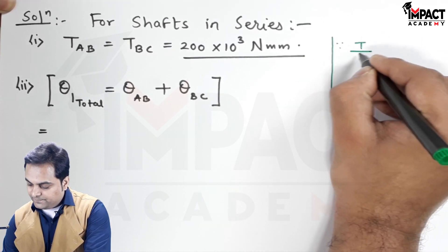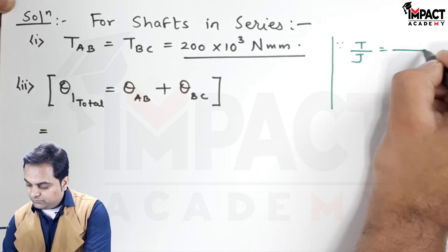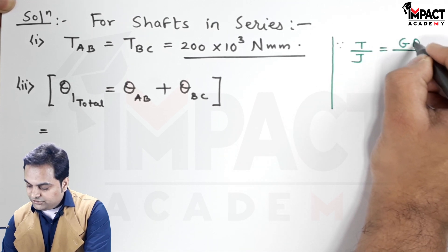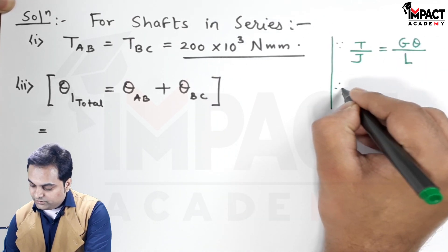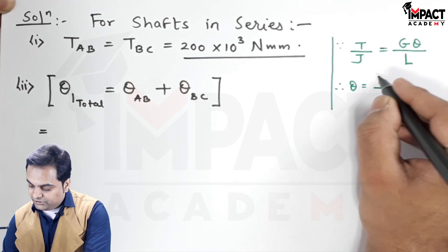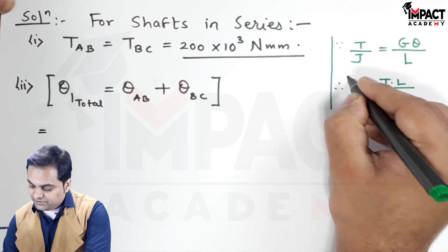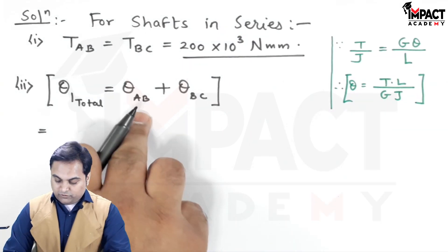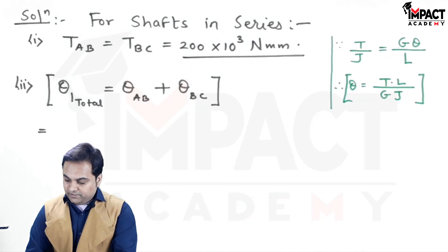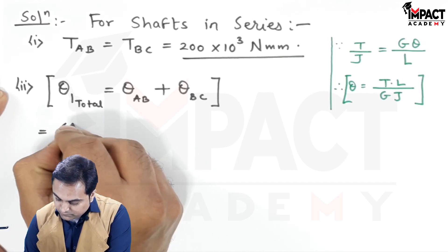T/J = Gθ/L, therefore θ = TL/GJ. For AB, it would be θ_AB = TL/GJ for portion AB.